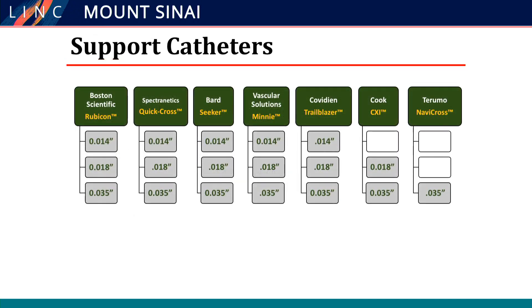Once you have the wire, you need support, and we talked about this today with Andrei showing his case. We want to have a support catheter, and there are different support catheters you can use. Typically for tibial vessels, I use the 018 support catheter because it allows you to go between 014 and 018. For SFA and popliteal, I usually use the NaviCross, which works very well.